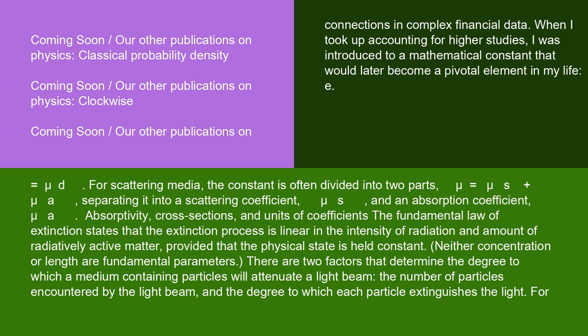For scattering media, the constant is often divided into two parts: μ = μs + μa, separating it into a scattering coefficient μs and an absorption coefficient μa.